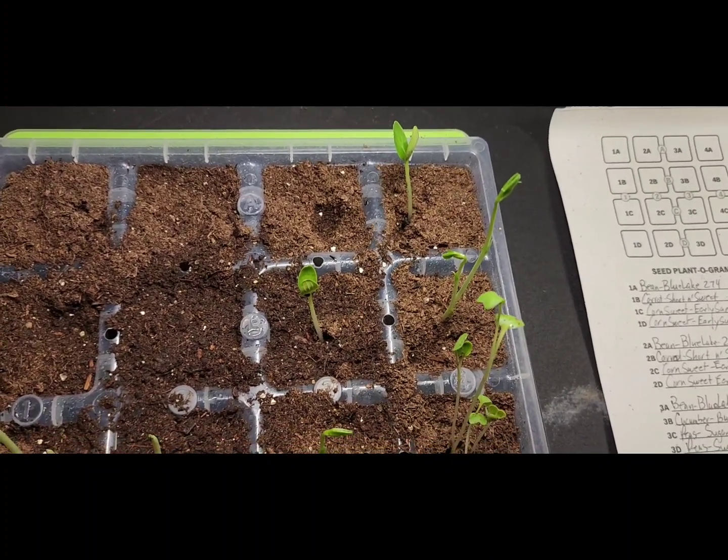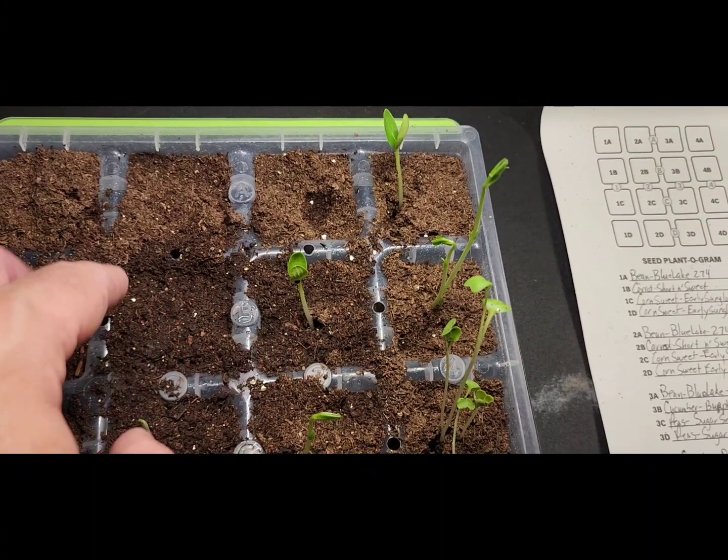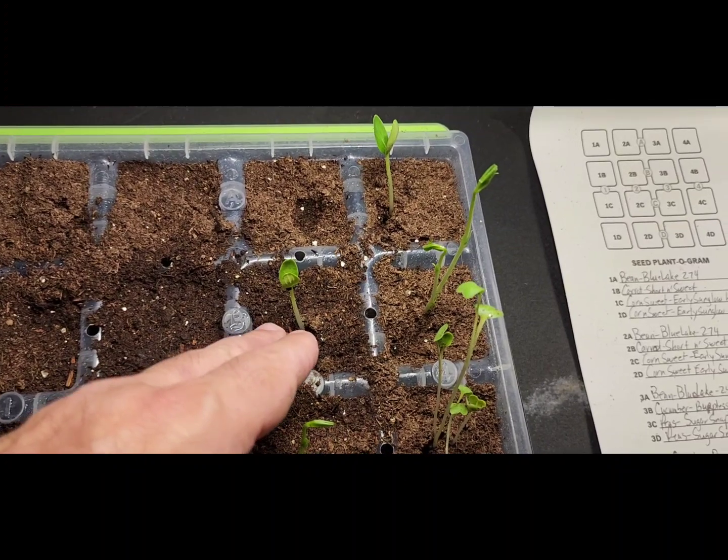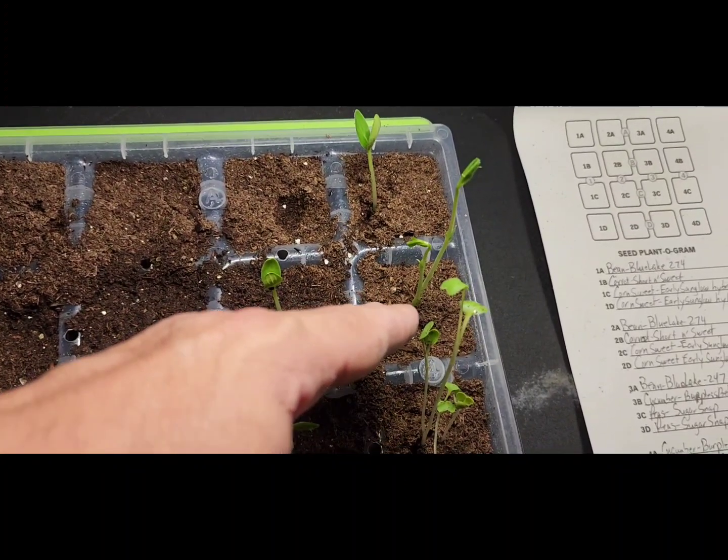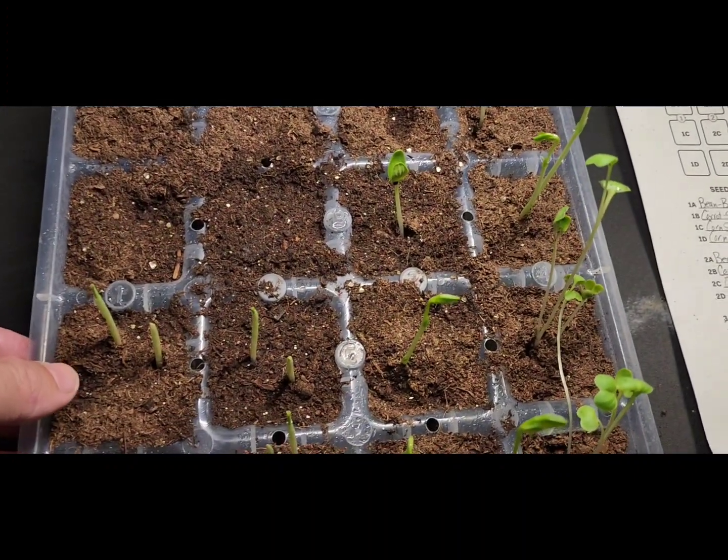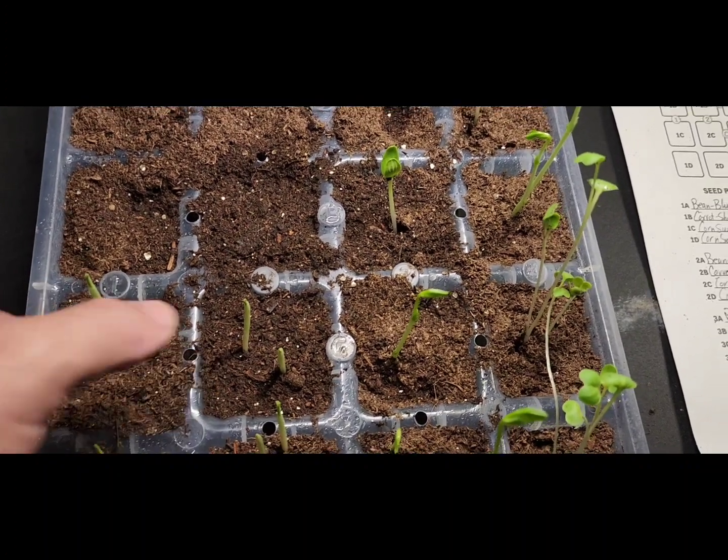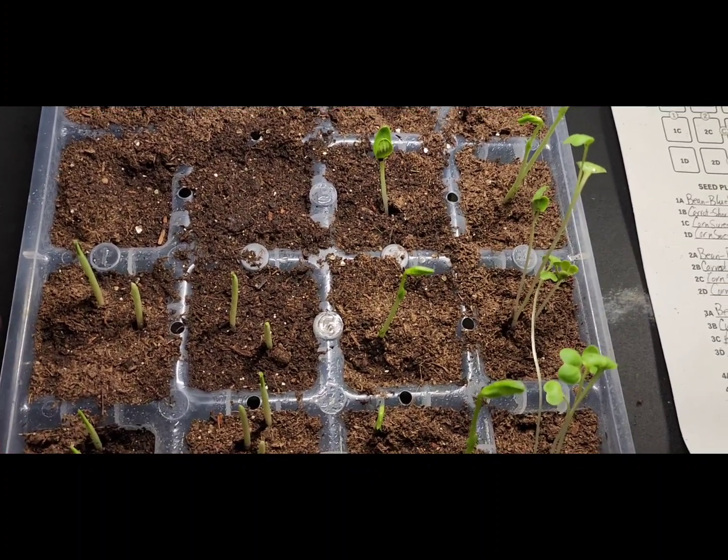On 1b this is carrots, and this is carrots. Nothing's happened there, but if you get to 3b we got cucumber, and then 4b we've got sugar snap peas. Then back down here in 1c, 2c, and then 1d and 2d.